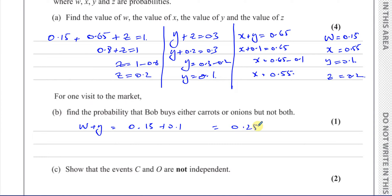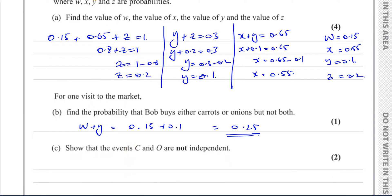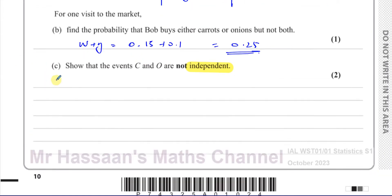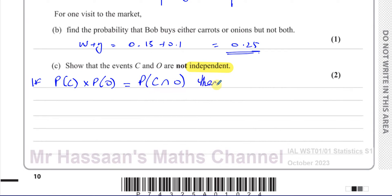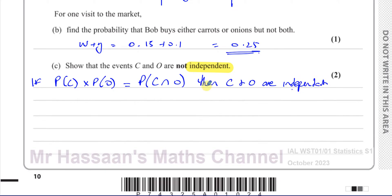Part C says show that the events C and O are not independent. We need to understand what independent events means. We can say that if the probability of C times the probability of O equals the probability of C intersection O, then C and O are independent. This is the condition for two events to be independent — the product of their separate probabilities equals the probability of their intersection.